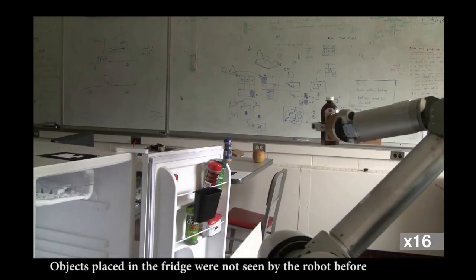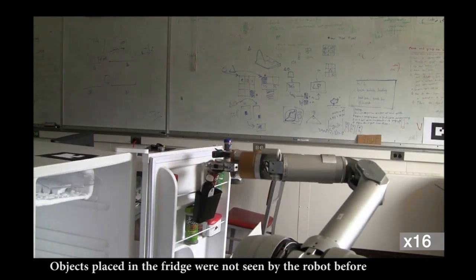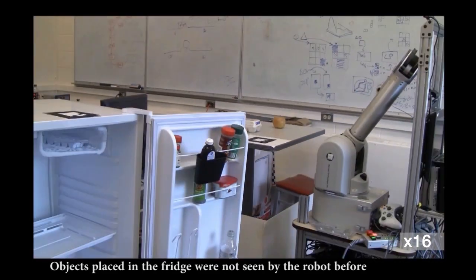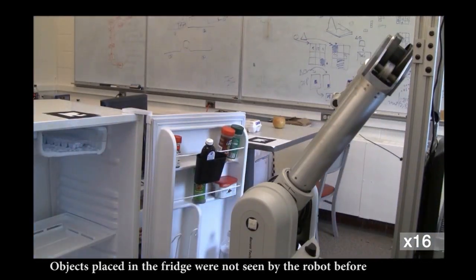There are two challenges in placing objects autonomously. First, the objects in the placing areas may never have been seen by the robot before. In this task, all objects are new to the robot.